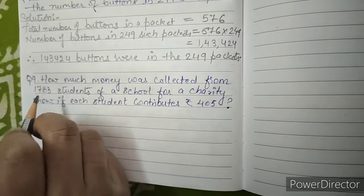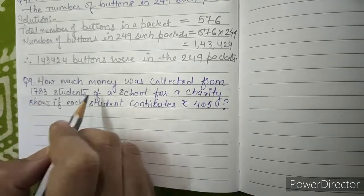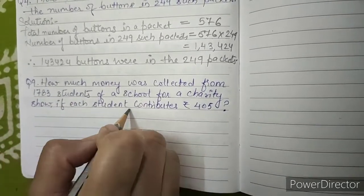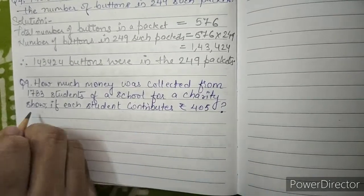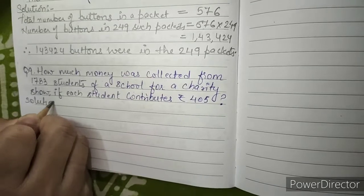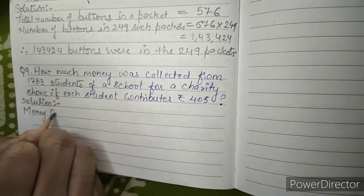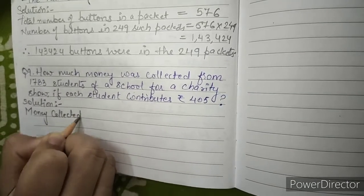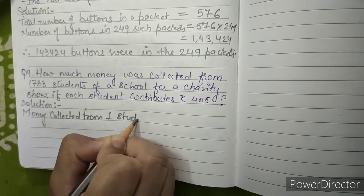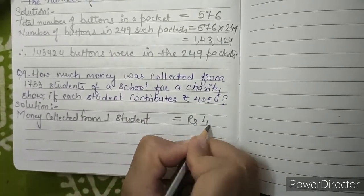Question number 9: How much money was collected from 1,783 students of a school for a charity show if each student contributes Rs. 405? Solution: Money collected from one student equals Rs. 405.